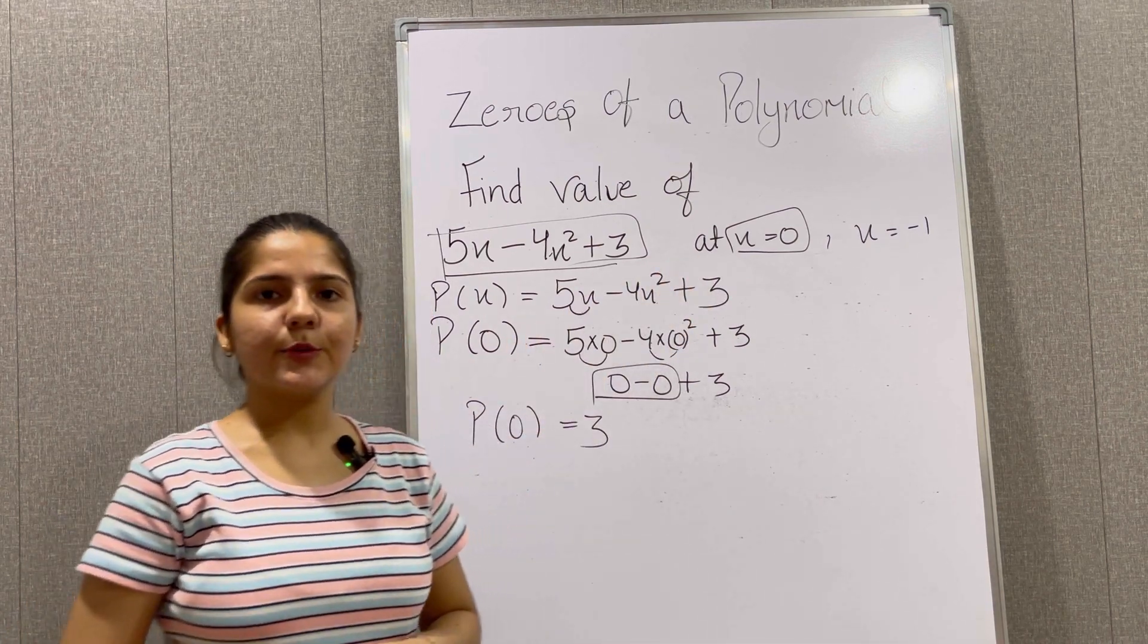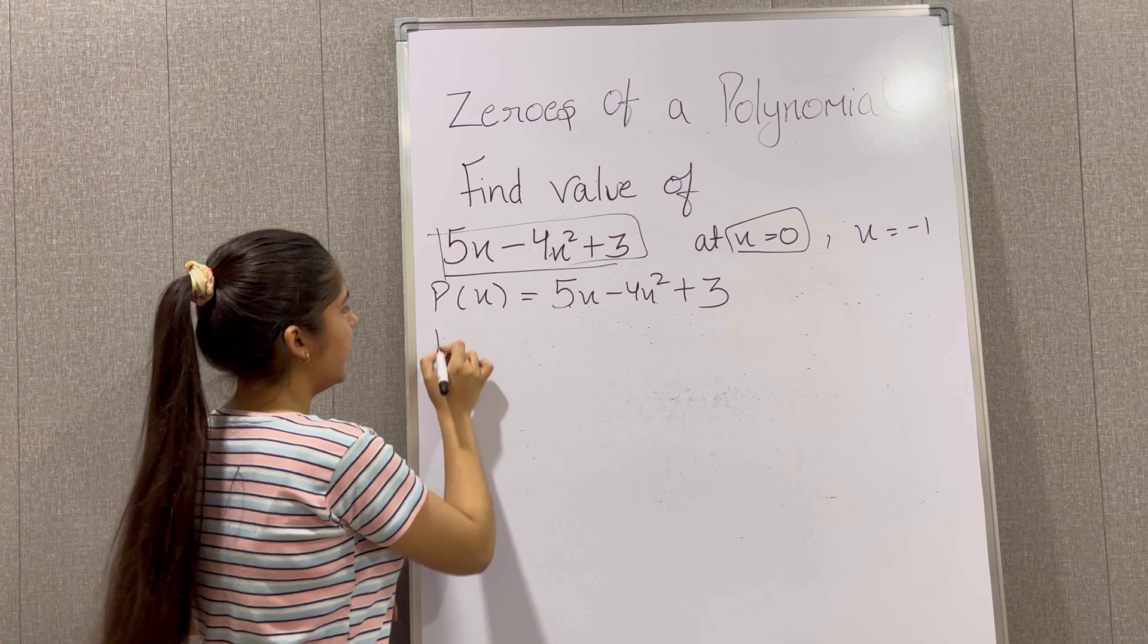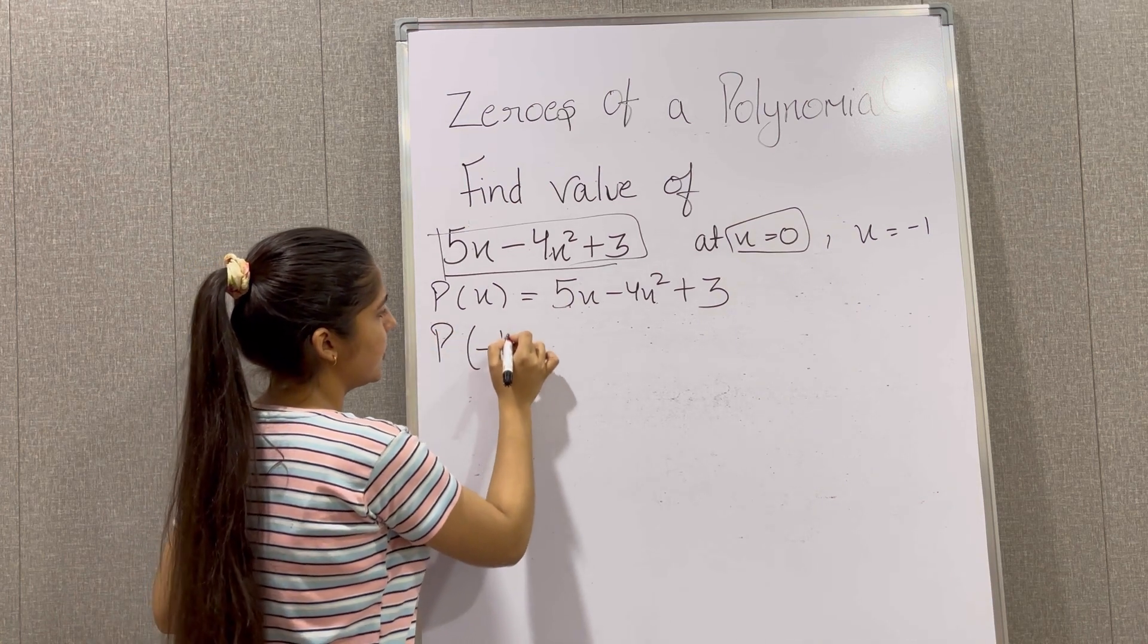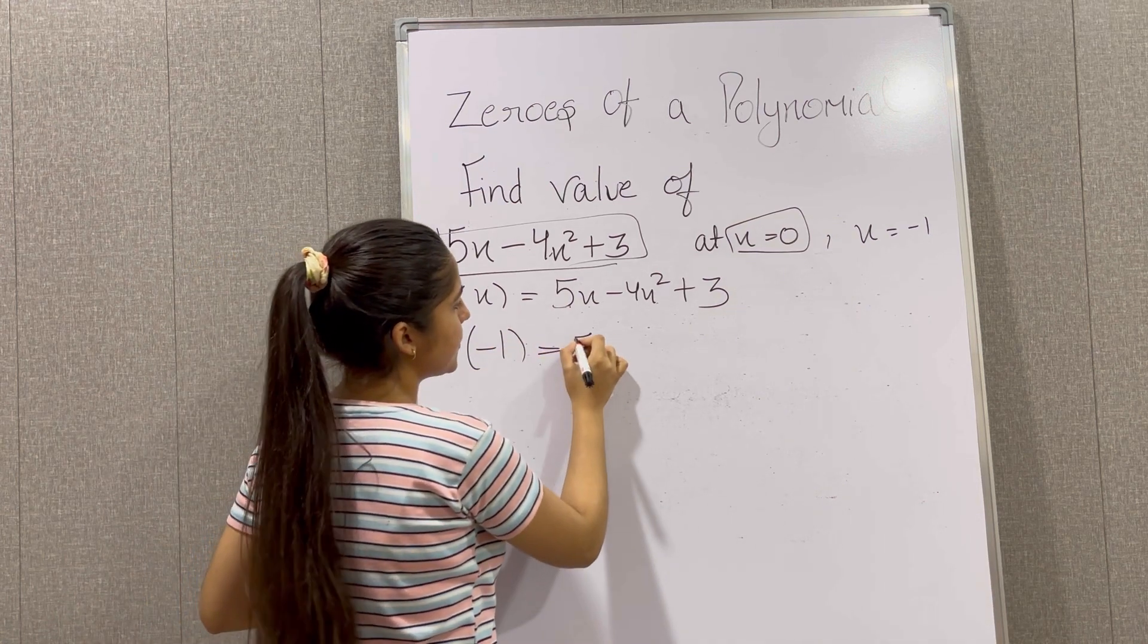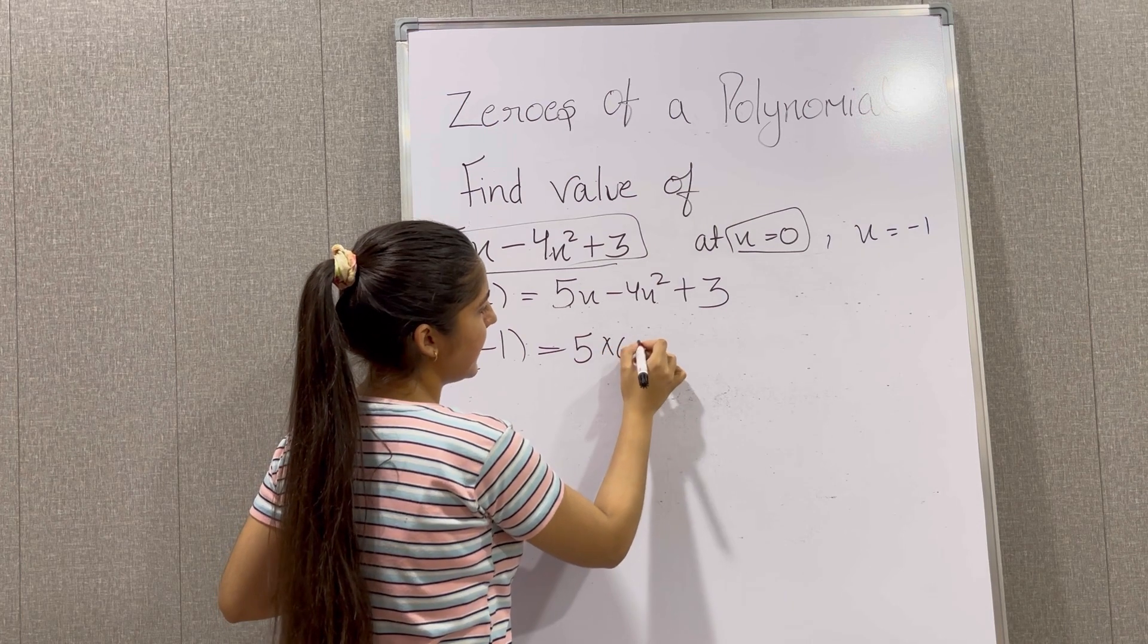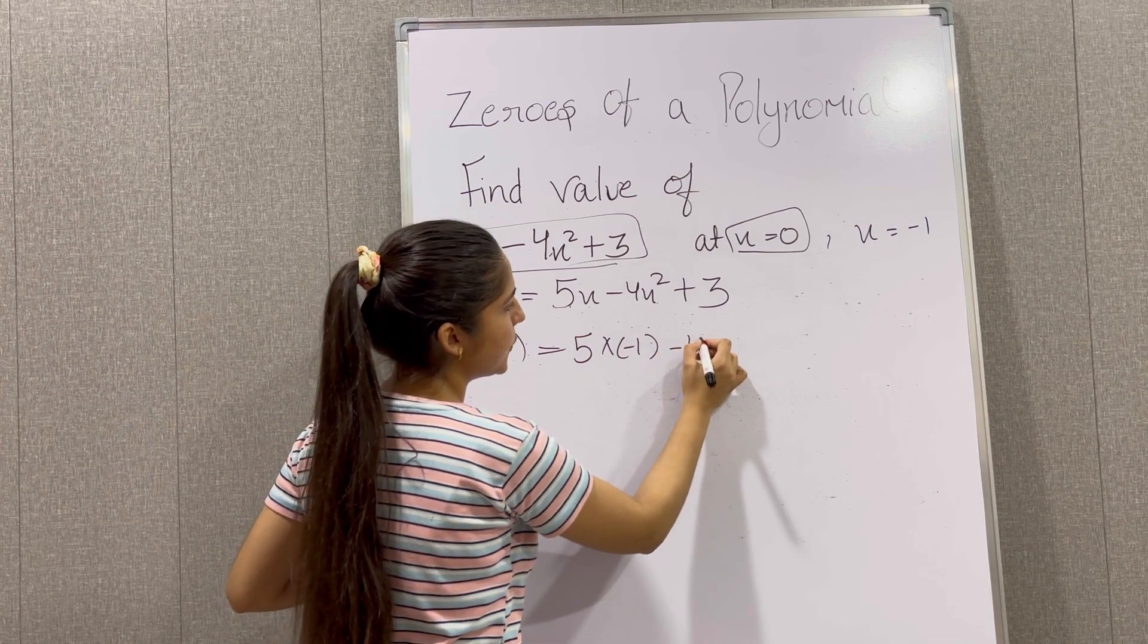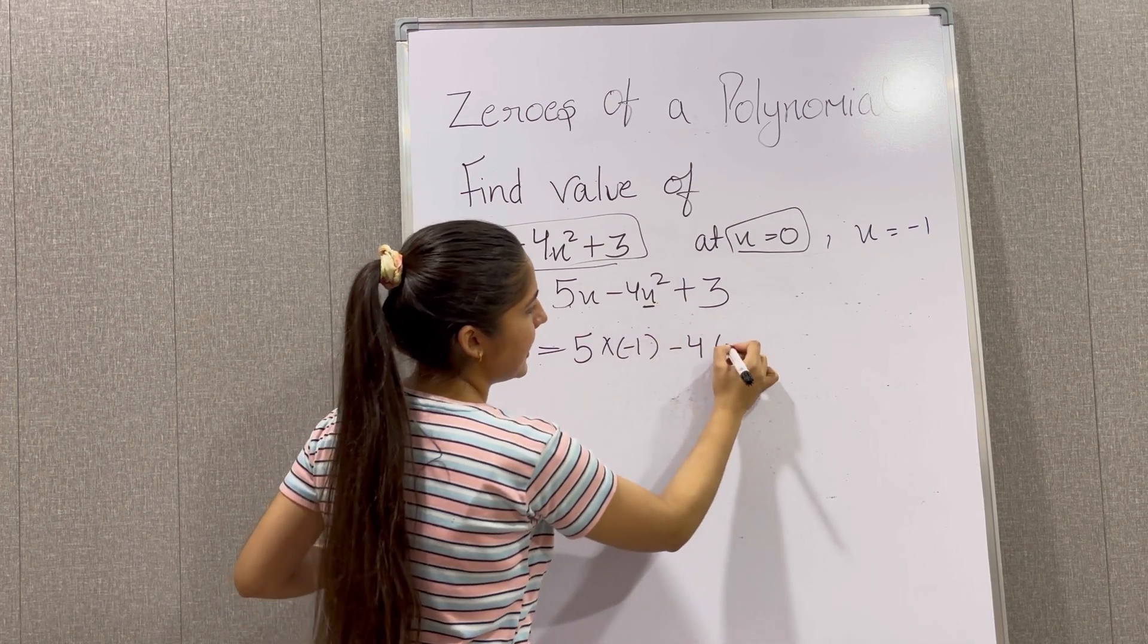Now we will solve it for x equals minus 1. Now P in place of x we are going to put minus 1, equals 5 multiplied with minus 1 minus 4 times minus 1 whole squared plus 3.